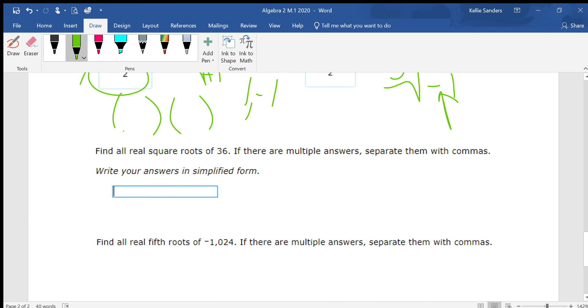Find all real square roots of 36. If there are multiple answers, separate them with commas. 6 and negative 6, because 6 times 6 is 36 and negative 6 times negative 6 is 36.